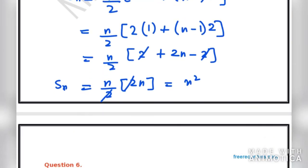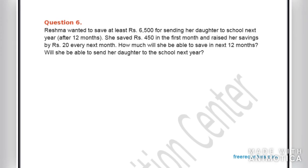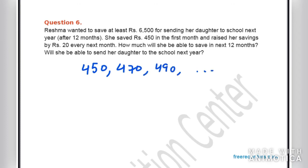Question number 6: Reshma wanted to save at least ₹6,500 for sending her daughter to school after 12 months. She saved ₹450 in the first month and raised her saving by ₹20 every month. So the sequence is ₹450, ₹470, ₹490, ... for 12 months. Here A = 450 and D = 20.